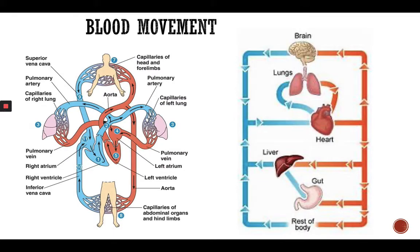First of all, we're going to start with blood movement. As you know, blood gives oxygen and essential nutrients to organs, and takes the waste materials and removes them from our organisms. It starts from the left ventricle — the aorta emerges from the left ventricle — takes the oxygenated blood around our body, and then comes back to the right atrium and right ventricle.